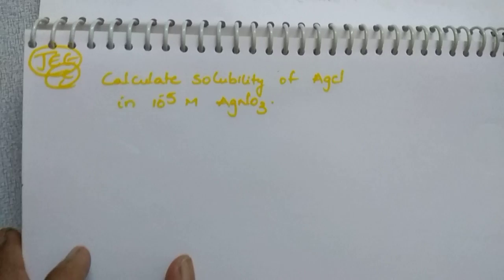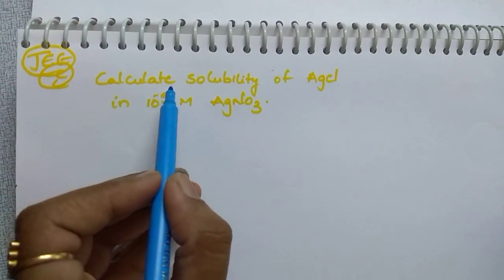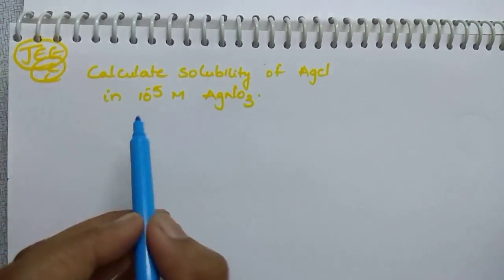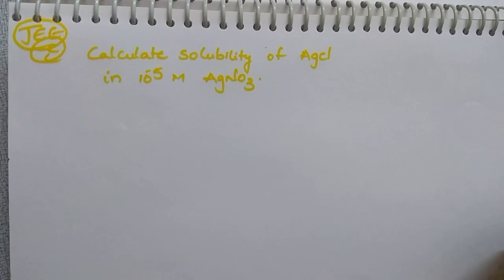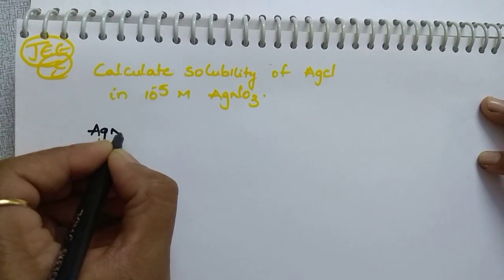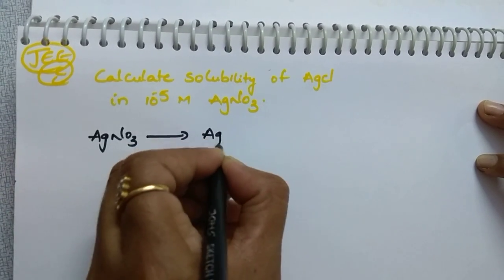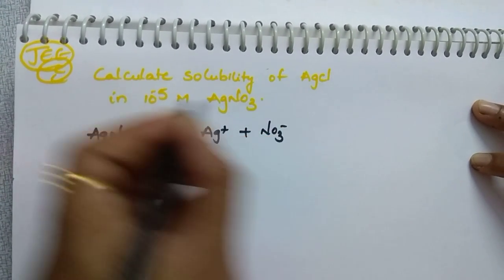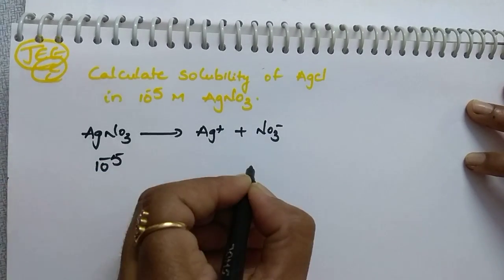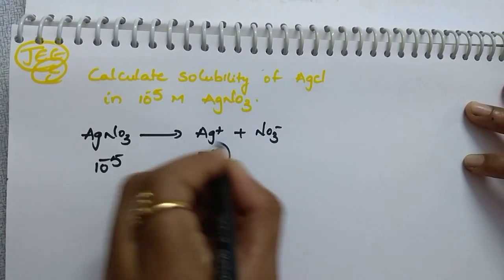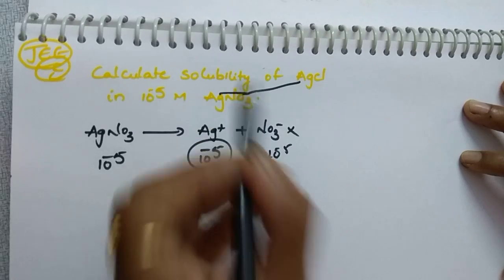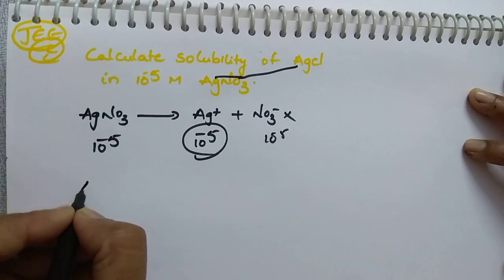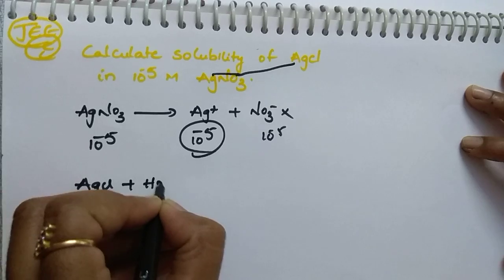The second question is also a JEE equation: calculate the solubility of AgCl in 10^-5 molar AgNO3. AgNO3 dissociates to give Ag⁺ and NO3⁻. We get 10^-5 moles of Ag⁺ and 10^-5 moles of NO3⁻. We focus on Ag⁺ because it is the common ion shared with AgCl.